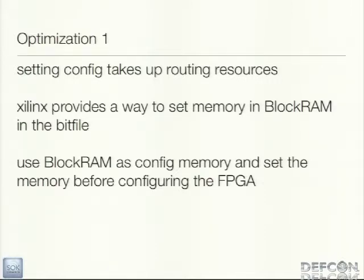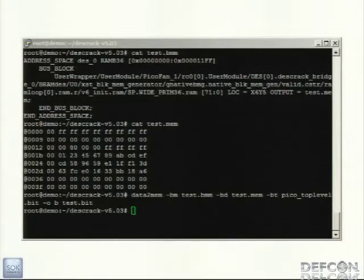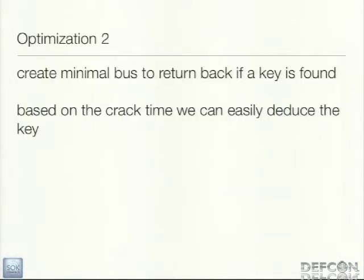It turns out Xilinx provides a method for programming specific block RAMs inside the bit file without having to rebuild the whole thing. We played around with this and got it to work. You set up a couple of files, run a command, and it drops memory into the bit file, configures the BRAMs, you program it, and everything comes up perfectly. For the return path, we created a really minimal bus that basically just says 'found a key.' Based on the time it took to find the key, since this is all deterministic at one key per clock cycle, we know with good accuracy exactly where in the key space it was. This got us about another 20% improvement.